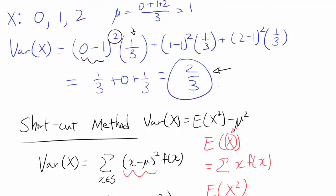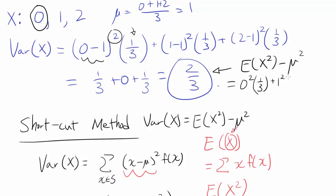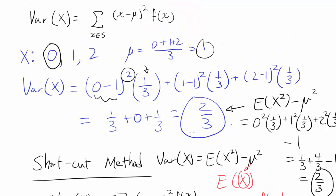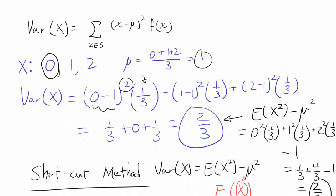Let's apply the shortcut to our example to verify we get the same result. E[x²] equals 0 squared times 1/3 plus 1 squared times 1/3 plus 2 squared times 1/3, and we subtract mu squared, where our mean is 1, so 1 squared is 1. This gives 0 plus 1/3 plus 4/3 minus 1, and minus 1 equals minus 3/3, so the result is 2/3. Both methods give the same answer. Variance of x by definition, and also using E[x²] minus mu squared.